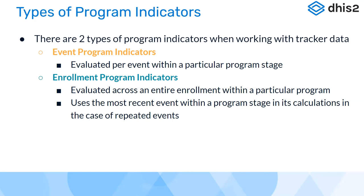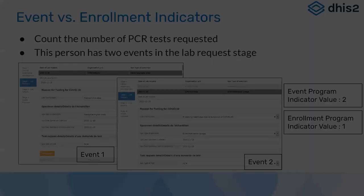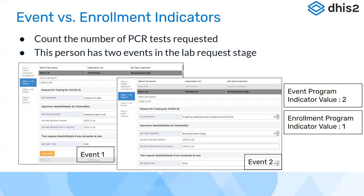We'll see examples in the next slide. If you want to see the number of PCR tests requested for a particular time period and organization unit, and there are two events — event one and event two — then if you are generating an event indicator, the indicator value will be two. If you're generating an enrollment indicator, the value will be one, because the enrollment indicator uses the latest information from the last stage where information has been entered.